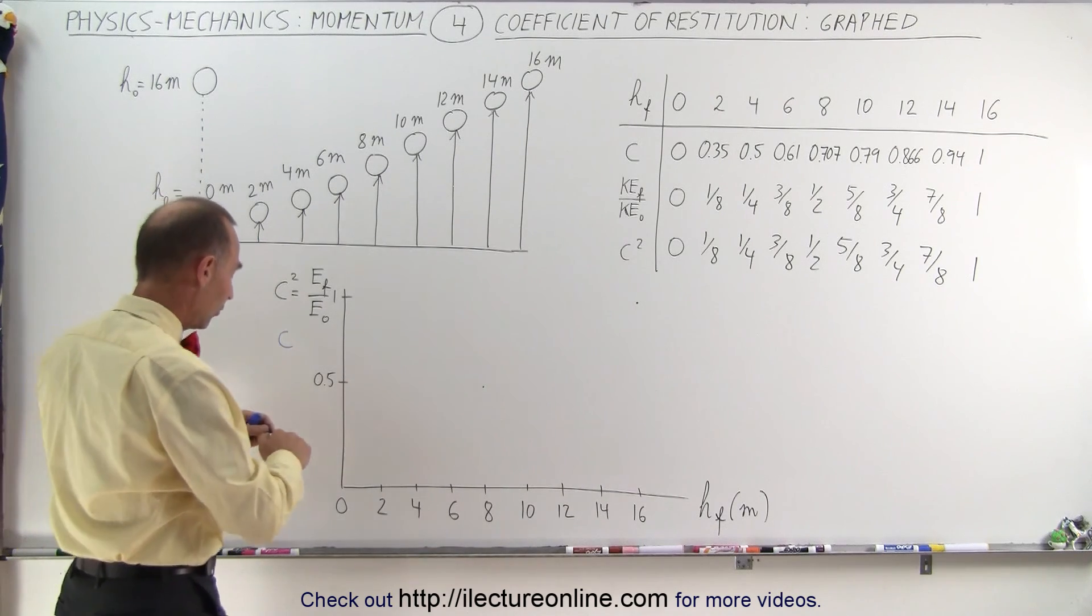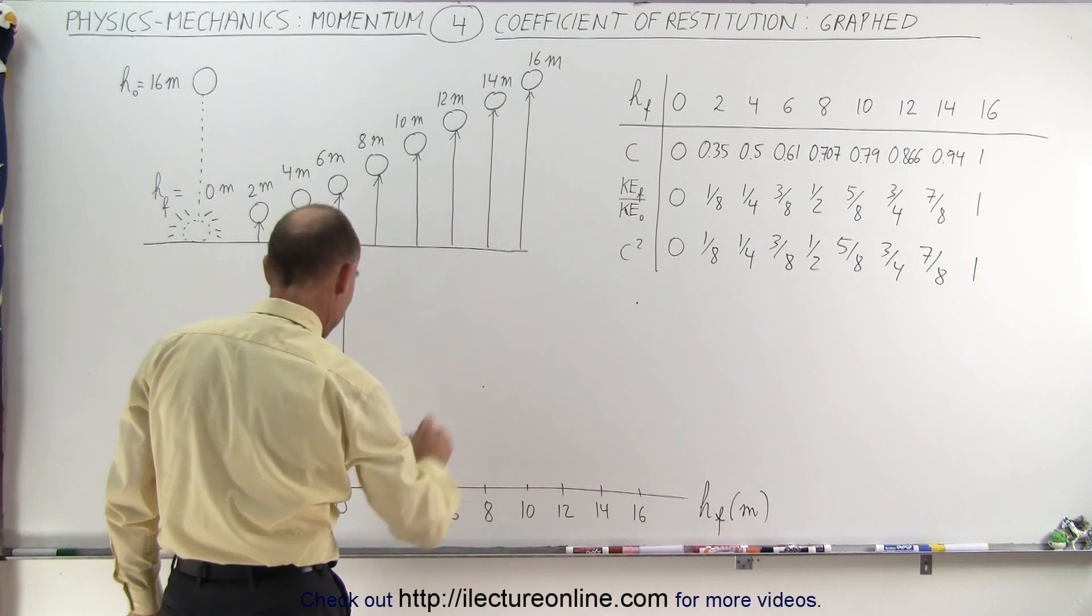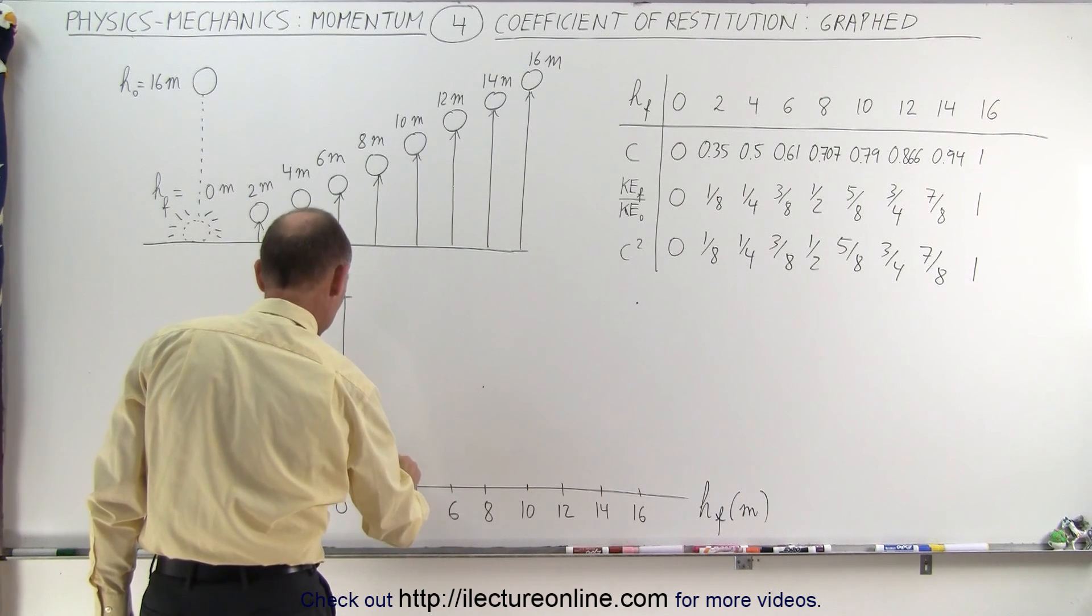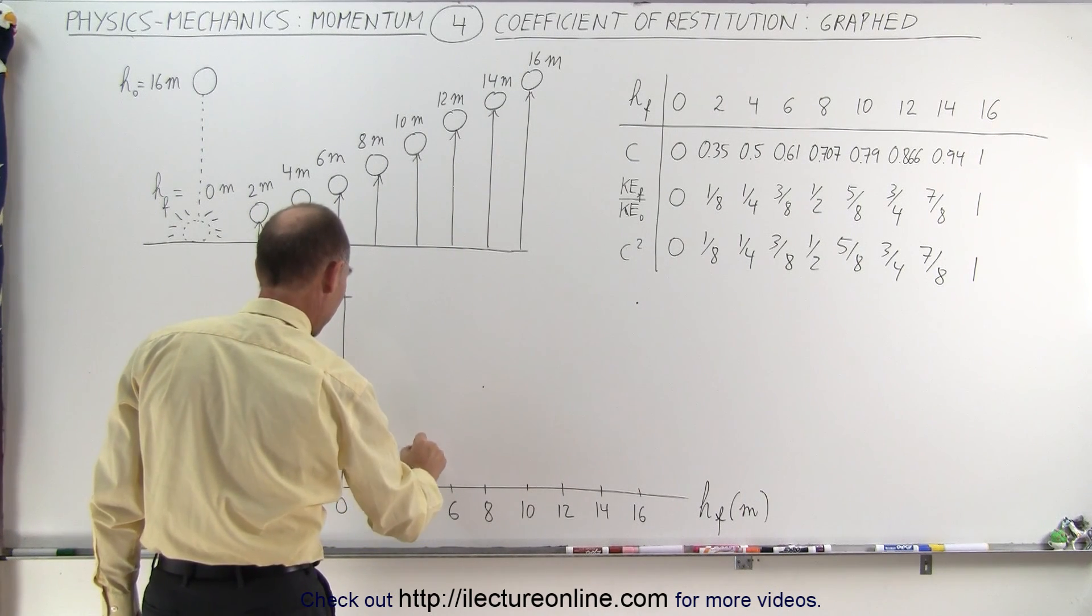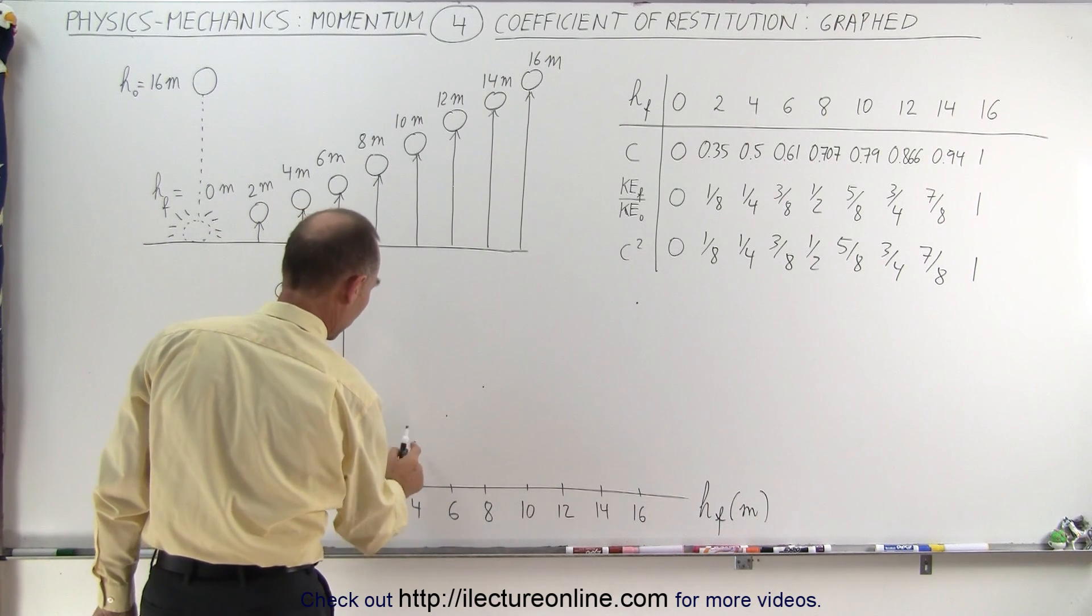So when the ball goes up two meters, we get back about one-eighth of the energy. And it goes up four meters, we get back about a half, six meters, we get about three-quarters.